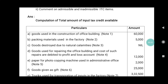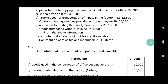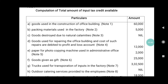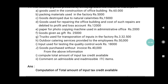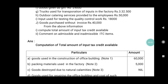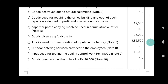Paper for photocopying machine used in administrative office: note number five, Rs. 2,000 — taken. Goods given as a gift: note number six, Rs. 25,000 — also taken. Truck used for transportation of input into factory: note number seven, Rs. 3,32,500 — taken. Outdoor catering service provided to employees: note number eight — not taken, because it is not related to business.